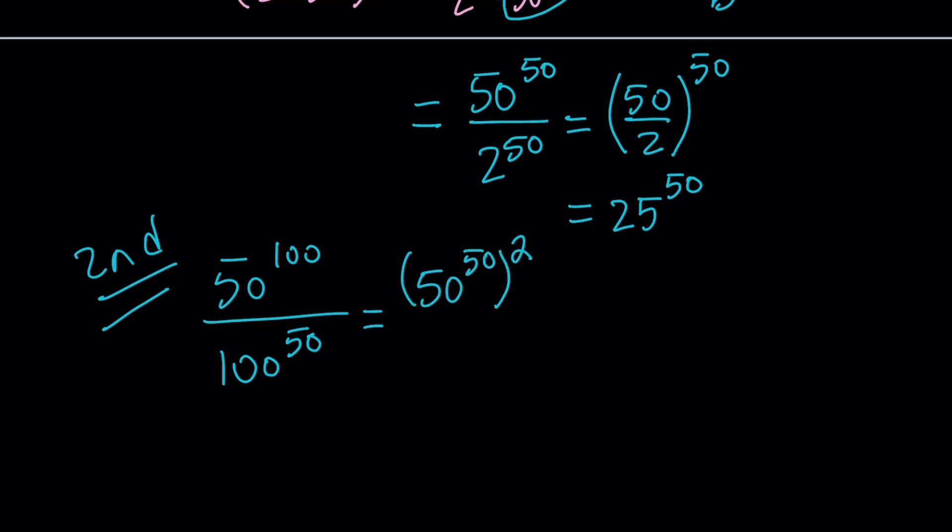50 to the power 100 can be written as 50 to the power 50 squared. Again, using another property of exponents, which tells us that if you have a to the power x to the power y, it is a to the power xy. Or you can do vice versa. If you can factor the exponent, then you can break it down like this. Because 50 times 2 equals 100. Notice that now I got the same exponent. That was my goal. Either getting the same base or the same exponent. But I have a square. What am I going to do with that?